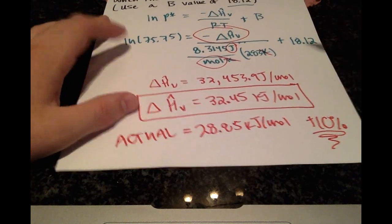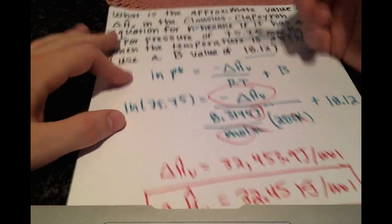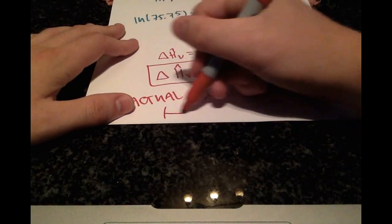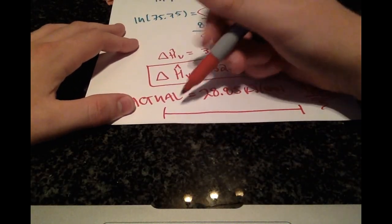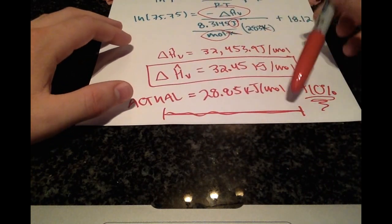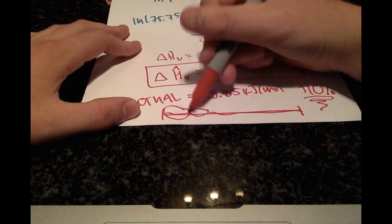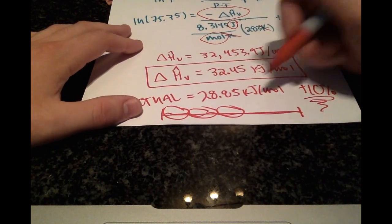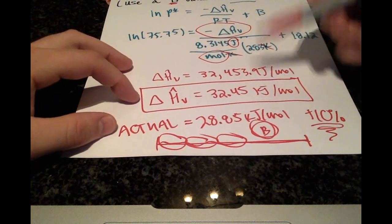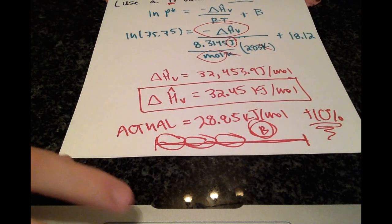And the reason for that is your b value, or if you're looking at a certain range. If you have experimental data, and you have a certain range of vapor pressures and temperatures, depending on which values you use, that'll give you a different b value for the constant, which will in turn give you a different final answer. Thanks for watching.